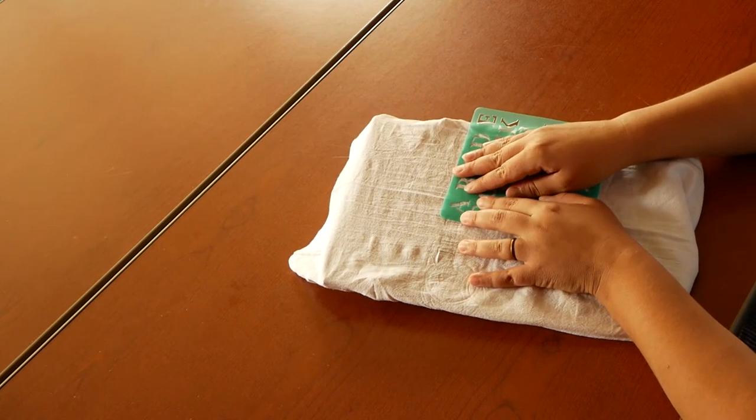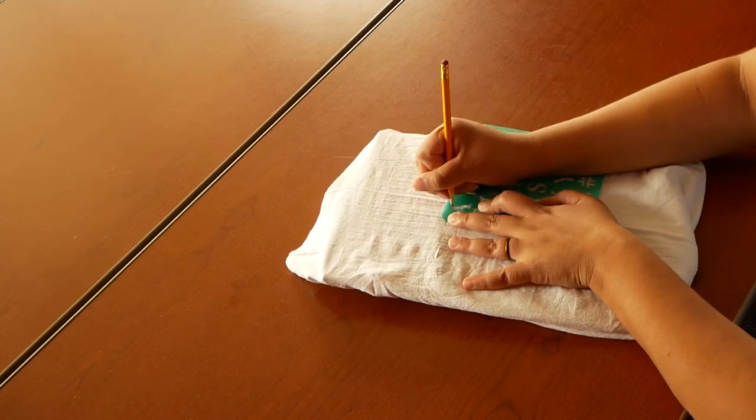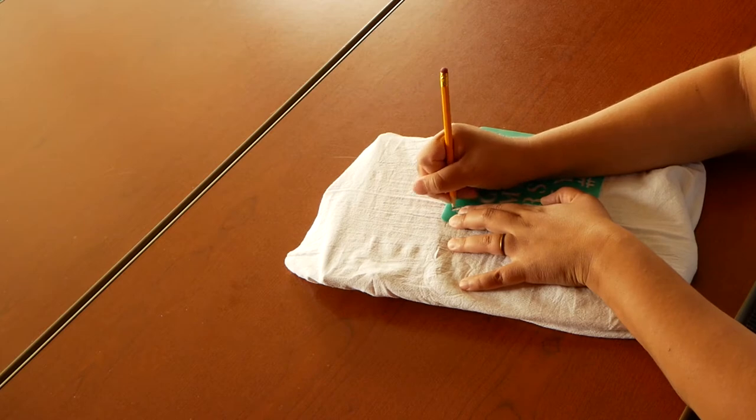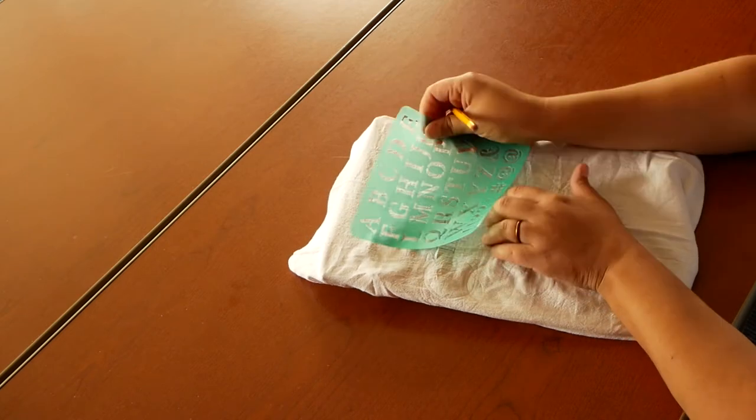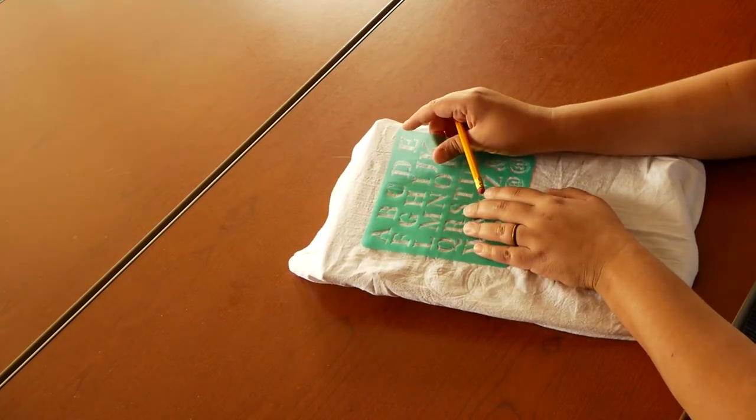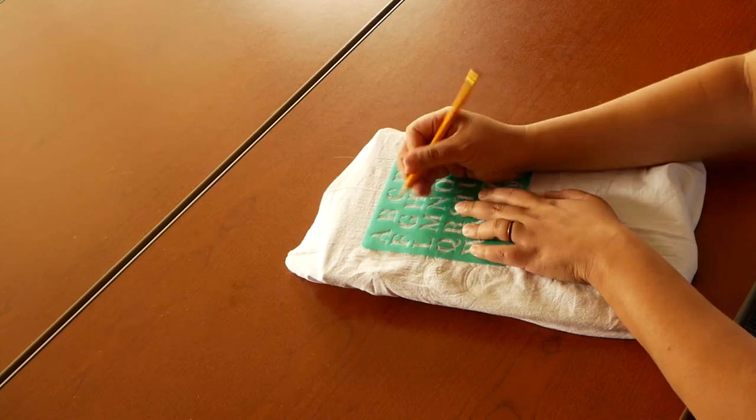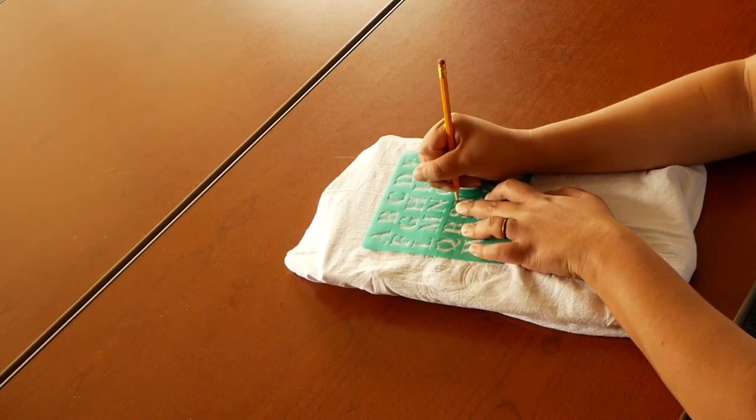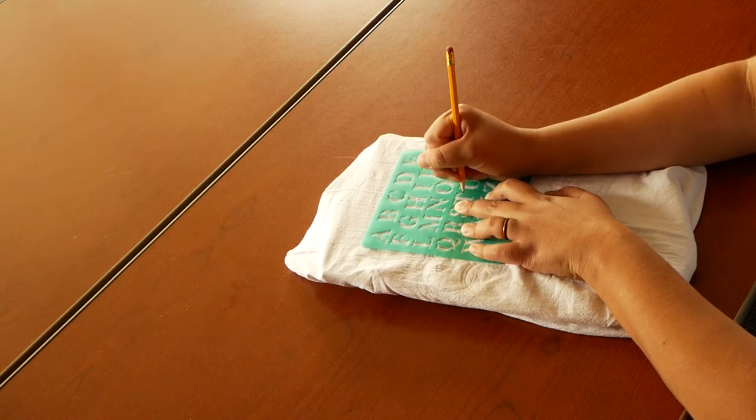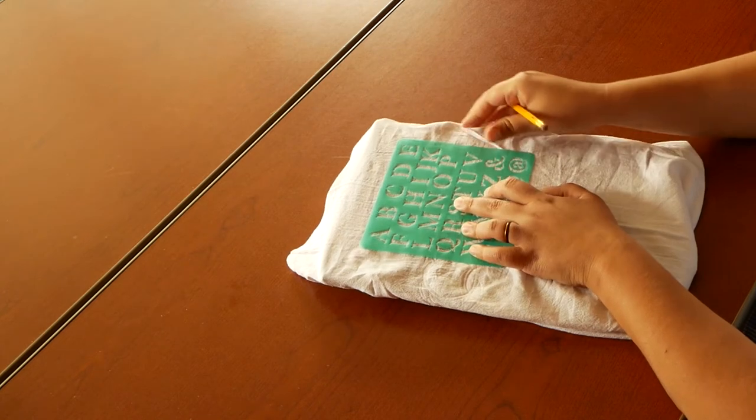So here I would also suggest pressing down your stencil, and that's going to keep the towel in place, you don't want the fabric to move too much. And just outline it, and you'll see it starting to come out. You can space your letters out as you want them.